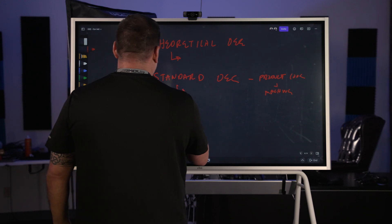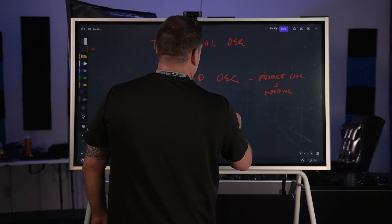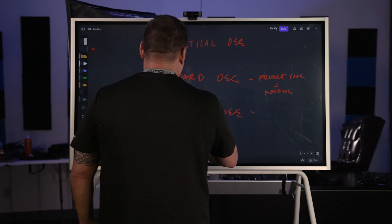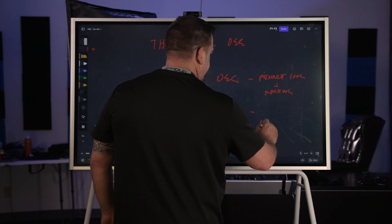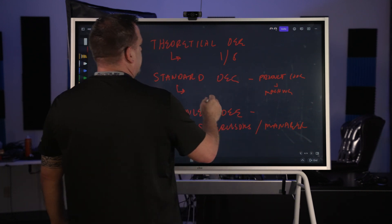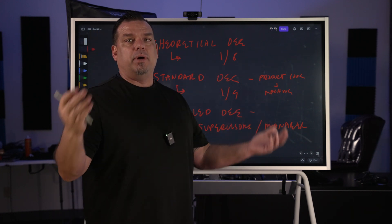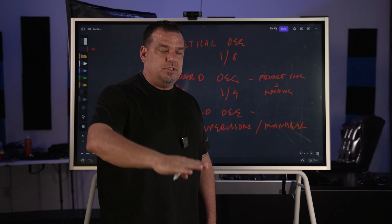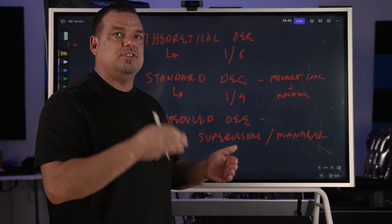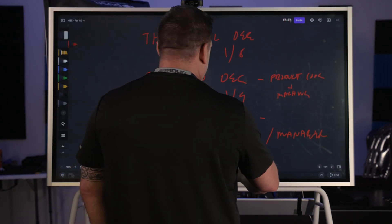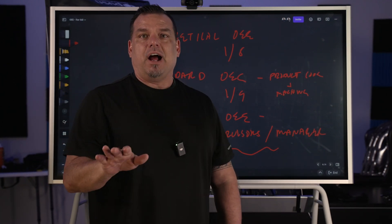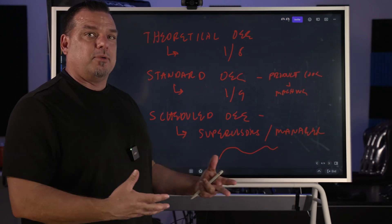Standard rate comes from your process engineers — the people who have signed off on the production rules for a specific product code and process. The last calculation is scheduled rate. This is the one most organizations use when calculating OEE primarily because it's a customer requirement. Scheduled rate comes from your supervisors or managers, and it's generally variable based on performance. It's the ability of the supervisor to gradually and incrementally raise the bar for their operators.